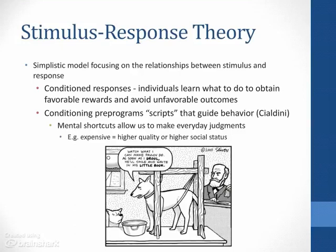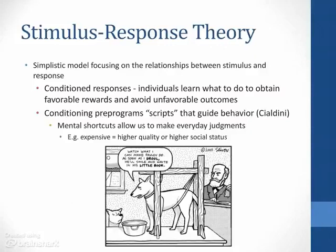Our first theory is stimulus-response theory. This is a rather simplistic model that focuses on the relationship between a stimulus and a response. It goes back to early research by Ivan Pavlov in which he conducted experiments with dogs. Each time he would give the dog a morsel of food, he would ring a bell. Soon, the sound of the bell alone was sufficient to make the animal salivate. Individuals, much like dogs, may learn what they need to do to obtain favorable rewards and avoid unfavorable outcomes. This is called conditioned responses.